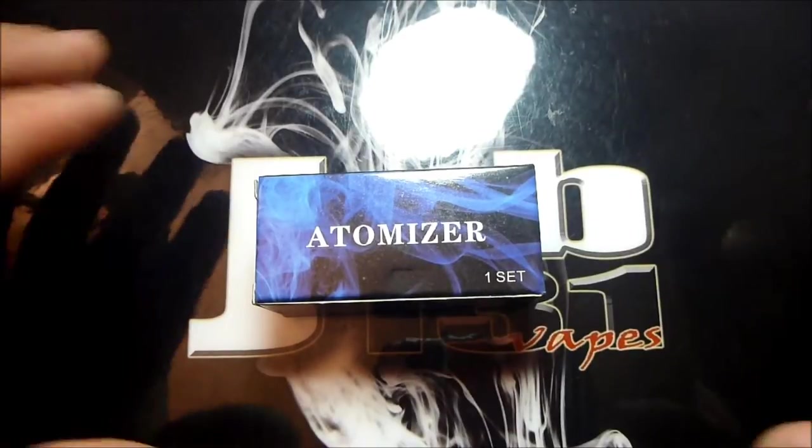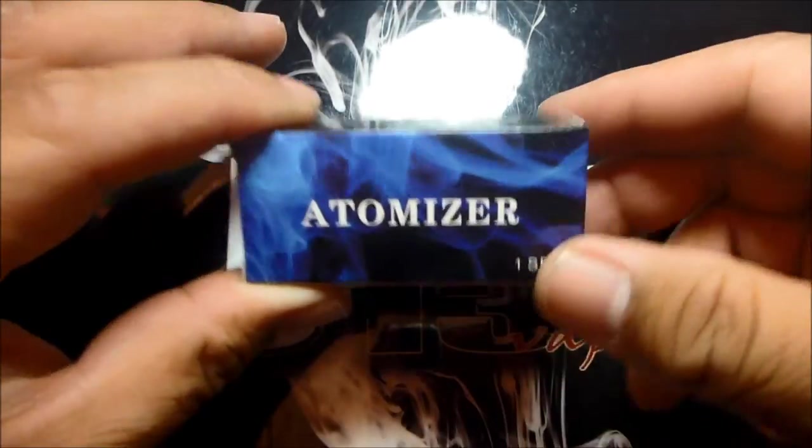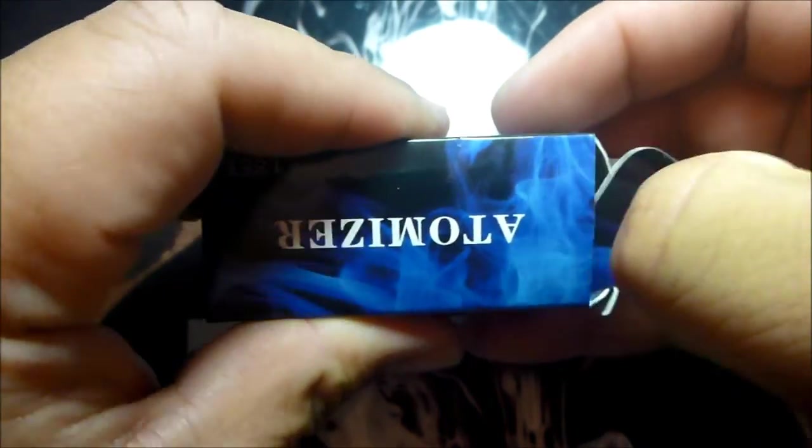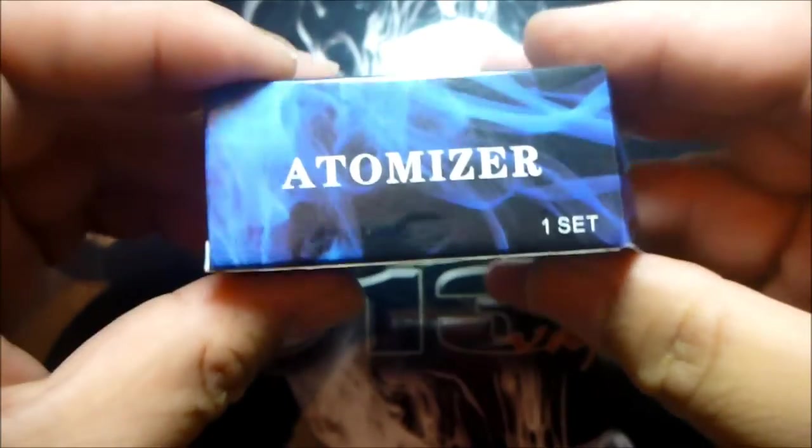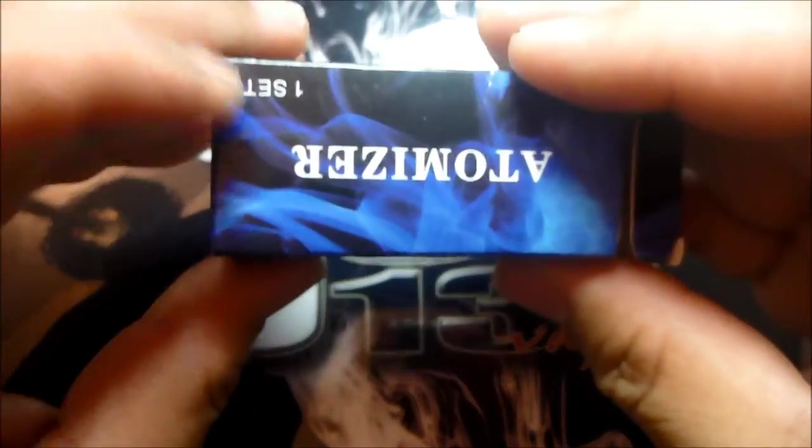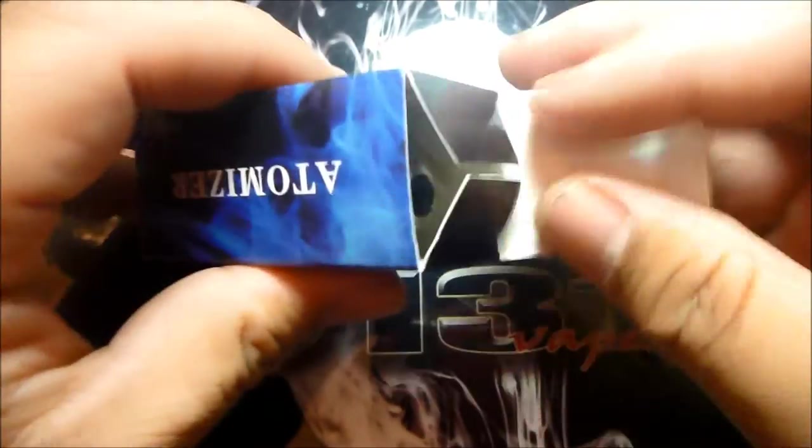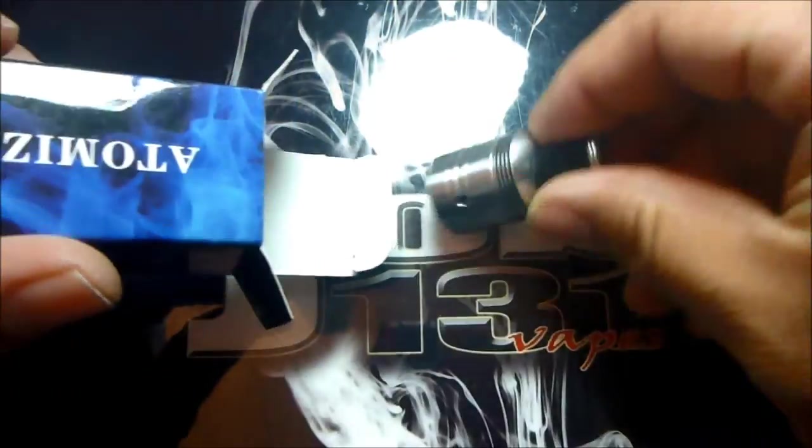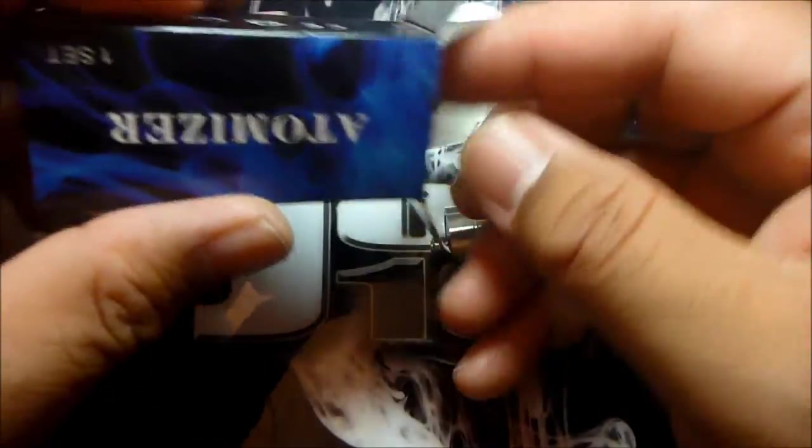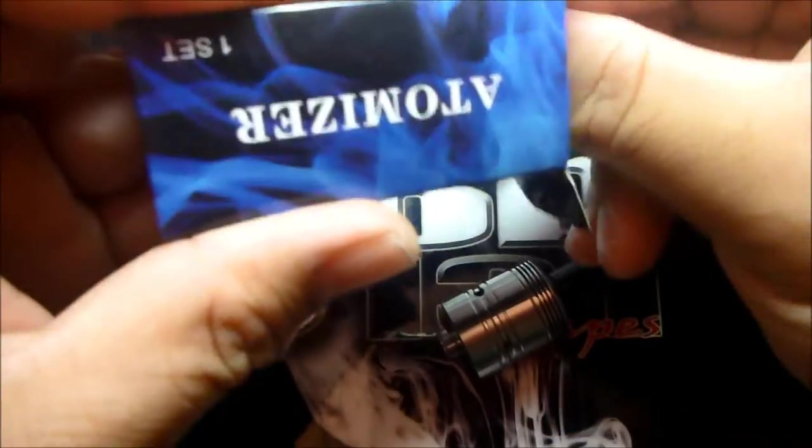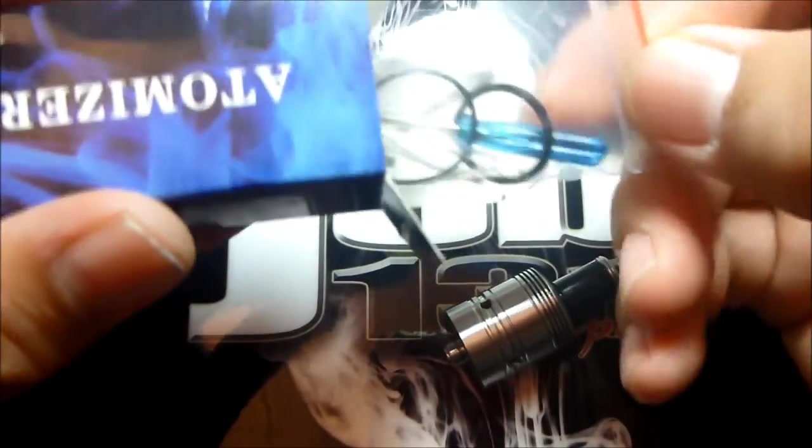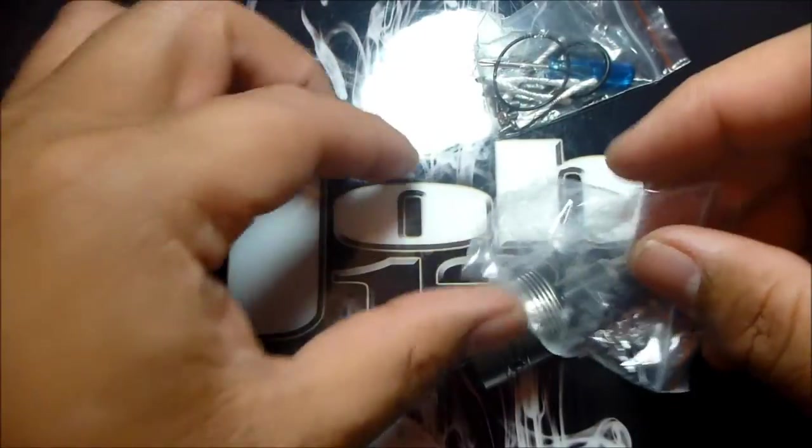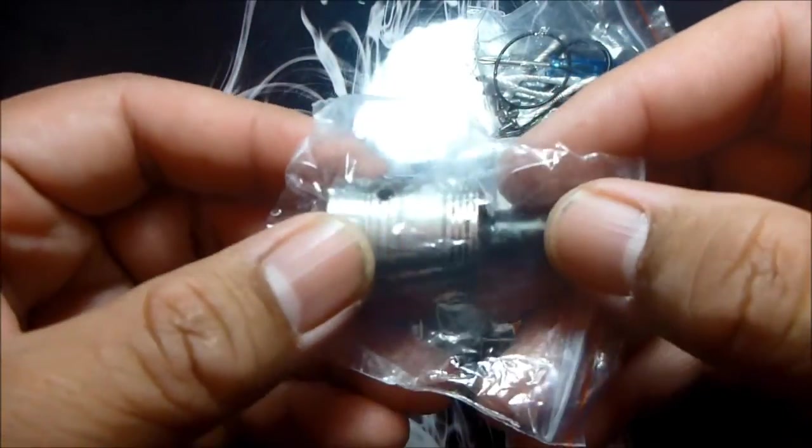Alright, here we are in a zoomed in view for the SXK 454 Big Block RDA. As you can see, this is the box. Atomizer, little smoke, whatever, and then you open it up. Then you get the atomizer. Obviously I opened this to clean it. I haven't actually put a build on yet.